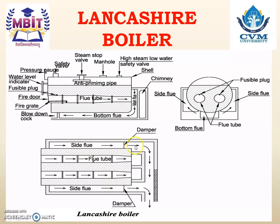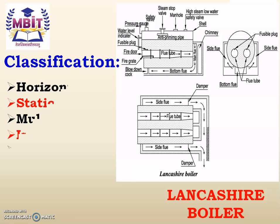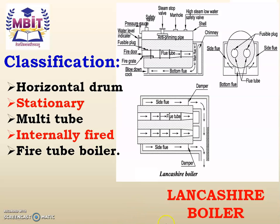From the top view you can see both the tubes, the left hand side passage, and the right hand side passage. Now let us study the classification of the Lancashire boiler. It is a horizontal boiler because the drum is arranged horizontally. It is stationary because the drum is located on a fixed construction and cannot be moved. It is a multi-tube boiler as it has two tubes. It is internally fired, as the fire grate is provided at the front portion of the tube where the fuel is burned inside the boiler drum.